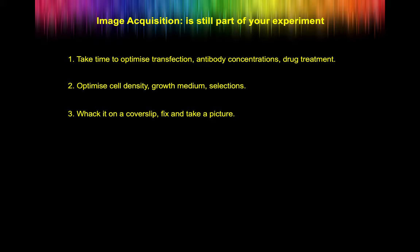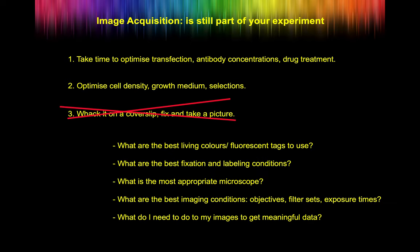The thing to remember is that image acquisition is still part of your experiment — it's not just the endpoint you don't have to think about. Most people take time to optimise the transfection, their antibody concentrations, the drug treatments, the cell density, and then they just put it on a coverslip, fix it, show it under a microscope and expect the picture to be fantastic. It's not that at all. You have to think of the microscope as part of the experiment. Make sure you're using the best fluorescent tags, the best fixation — because not all fixations work equally well for all antibodies and different organelles. Really think about what's the most appropriate microscope.